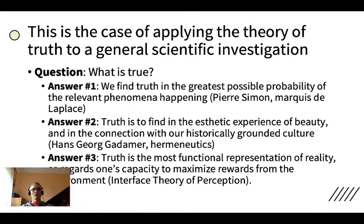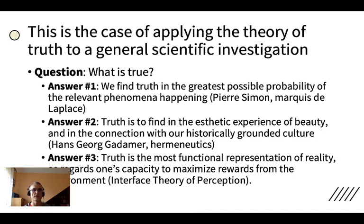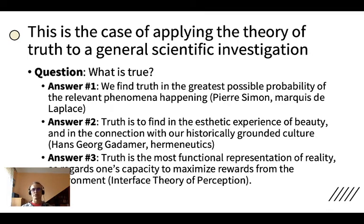I refer here to the three essential theories of truth. First, there is the probabilistic theory of truth: we find truth in the greatest possible probability of the relevant phenomena happening, sourced from the writings of Pierre-Simon Marquis de Laplace. Secondly, the hermeneutical answer: truth is to be found in the aesthetic experience of beauty and in the connection with our historically grounded culture, sourced in the writings of German philosopher Hans-Georg Gadamer. And finally, there is the third truth: truth is the most functional representation of reality as regards one's capacity to maximize rewards from the environment.